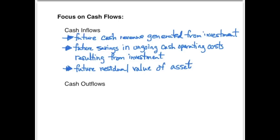Let's first talk about the cash inflows that we can see from a capital investment. For example, the future cash revenues that will be generated from that investment, and the future savings in ongoing cash operating costs resulting from the investment. Think about a new piece of equipment versus an old piece of equipment — a new piece of equipment will likely require less operating costs. Also, you have to think about future residual value. If you plan on a piece of equipment lasting 10 years and at the end of those 10 years you could sell it for $5,000 or $10,000, that residual value is the same thing as a cash inflow at that time.